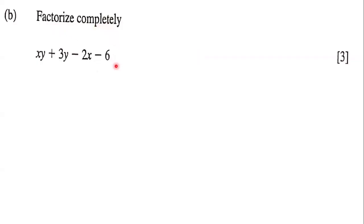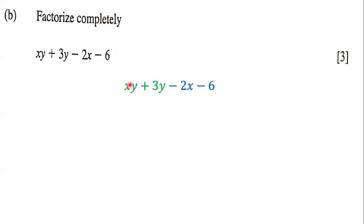Factorize completely. We have xy + 3y - 2x - 6. We're going to factorize the first two terms and then factorize the last two terms.